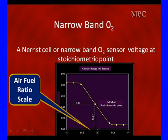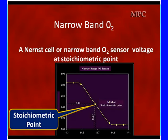We're going to start our Wideband Oxygen Sensor discussion by better understanding the Narrowband, also known as the NERD cell. The air-fuel ratio is shown across the bottom, ranging from 14.3 to 15.1. The point in the middle we're pointing to is the ideal balance between air and fuel — that is 14.7 to 1. If you want to be really precise, on research grade gasoline it's 14.67.